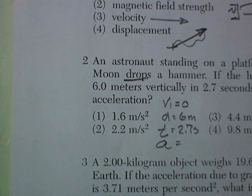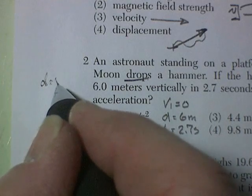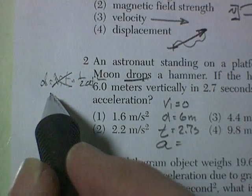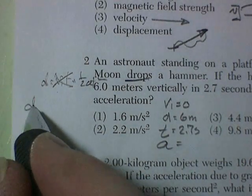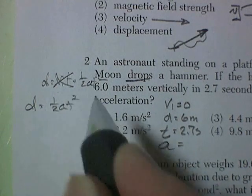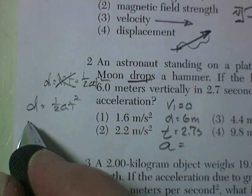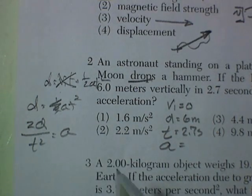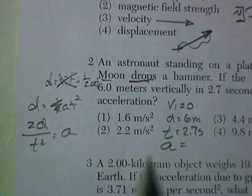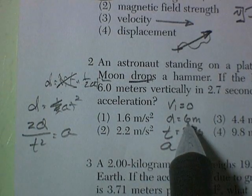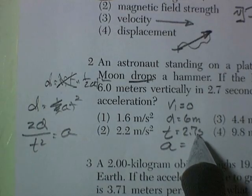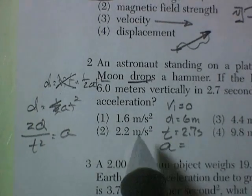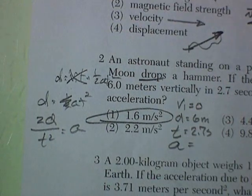Write the equation in the margin: d = v_i·t + ½at². Since initial velocity is zero, that term drops out, leaving d = ½at². Solving for a: multiply both sides by 2 and divide by t², giving a = 2d/t². Plugging in: 2 times 6 is 12, divided by 2.7 squared — call it 3 squared, which is 9 — so 12 divided by 9 is about 1-point-something. We're looking for an answer that's 1-point-something.